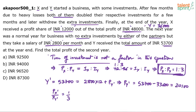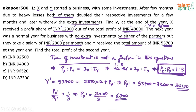The 1:3 profit ratio will continue in the next year as well, because profit is based on investments and the investments haven't changed. First they take their salaries, and whatever is left is divided in the respective ratio. So profit of X in Year 2 = profit of Y ÷ 3 = 20,100 ÷ 3 = ₹6,700.